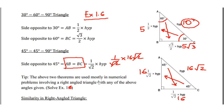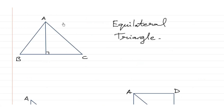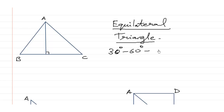These theorems are mostly used in numerical problems involving right angle triangles with any of the above angles given — either a 30, 90 triangle or a 45, 90 triangle. But sometimes we are given equilateral triangles, and in equilateral triangles we use the 30, 60, 90 triangle theorem.